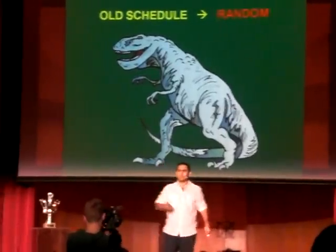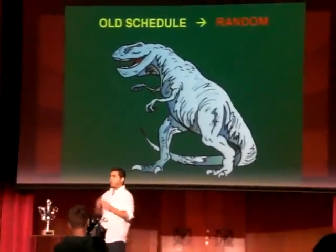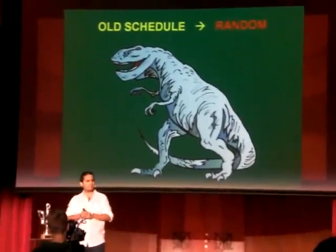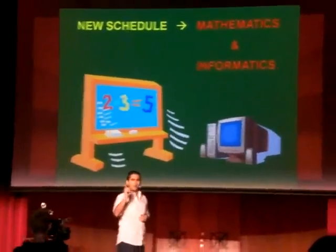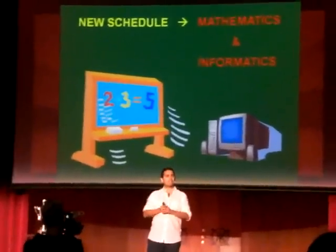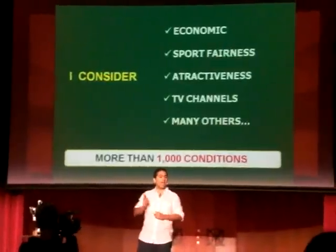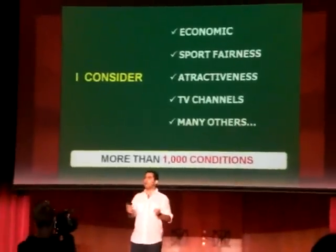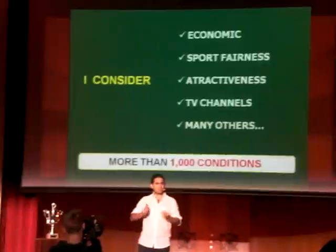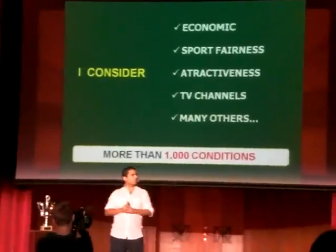Since very old times, most football leagues around the world used to have a random procedure to schedule their games. I propose the use of mathematics and informatics to generate better schedules that can consider economic conditions, sport fairness, attractiveness for the fans, TV channel requirements, and many other conditions.